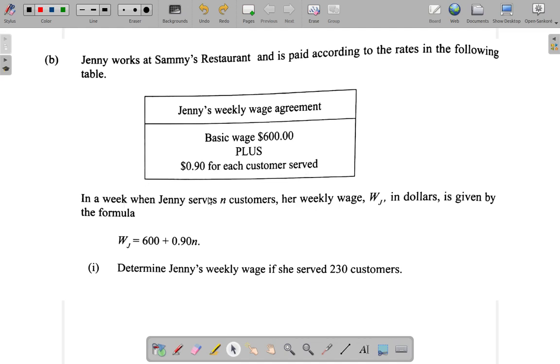In a week when Jenny serves N customers, her weekly wage WJ in dollars is given by the formula: WJ equals $600 plus $0.90 times N.